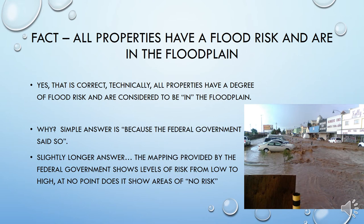The simple fact is that all properties have a flood risk and are in the floodplain. It does not seem reasonable to say that, but it is correct. The reason is very simple — because the federal government said so. More accurately, when the federal government made the maps of floodplain areas, they determined three levels of risk: high risk, moderate risk, and low risk. There is no such thing on the federal flood insurance rate maps as an area of no risk.